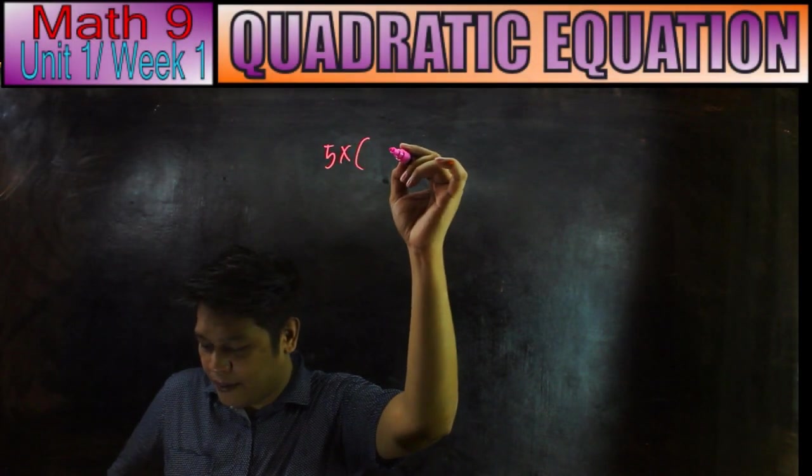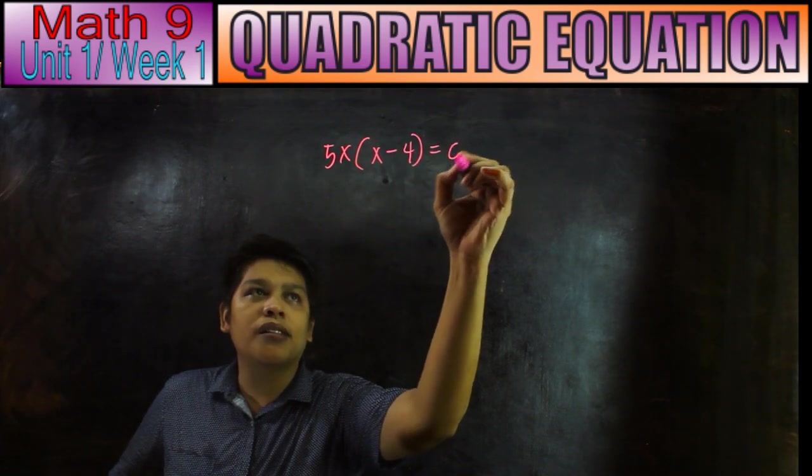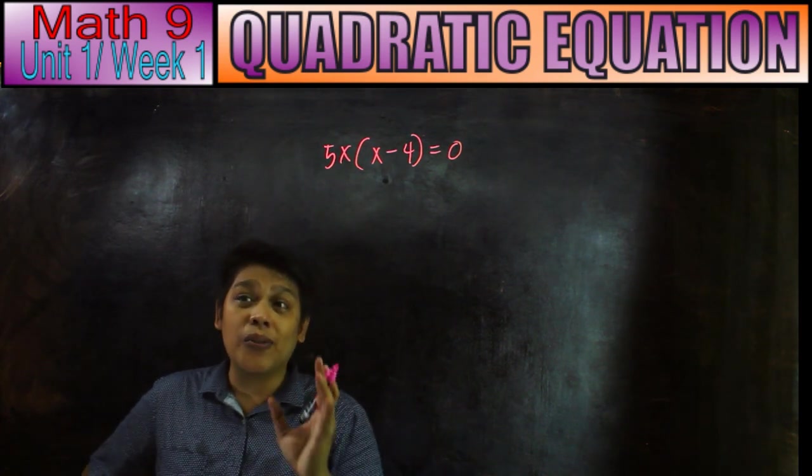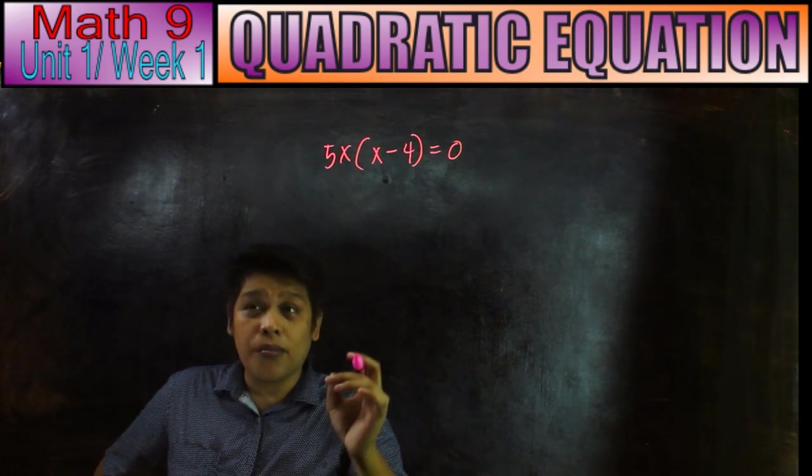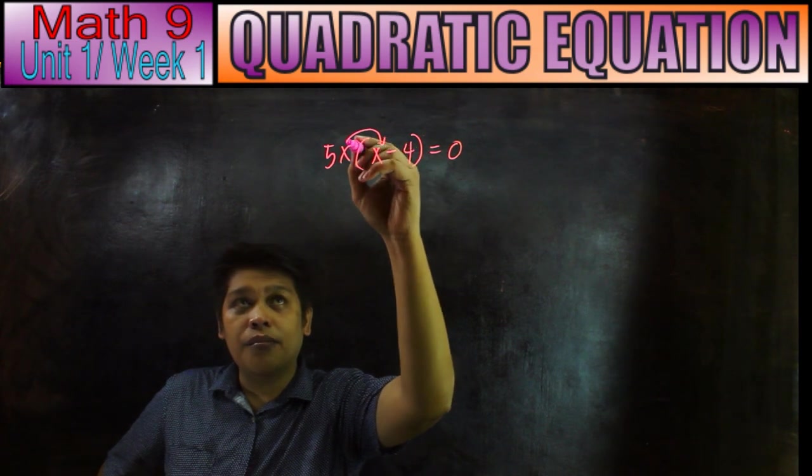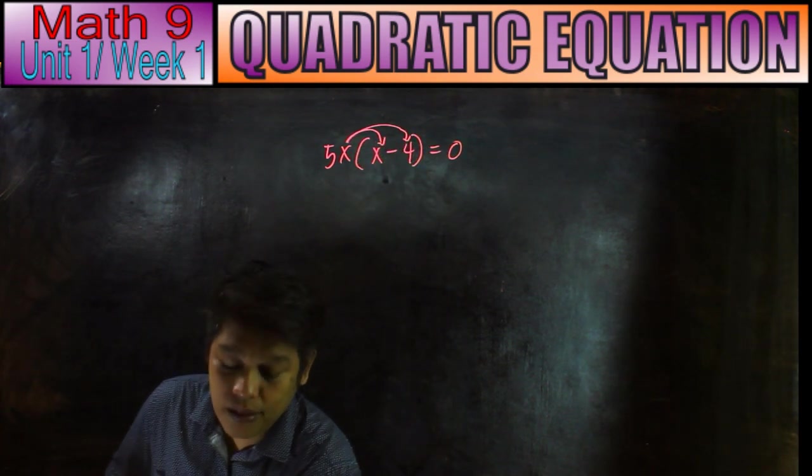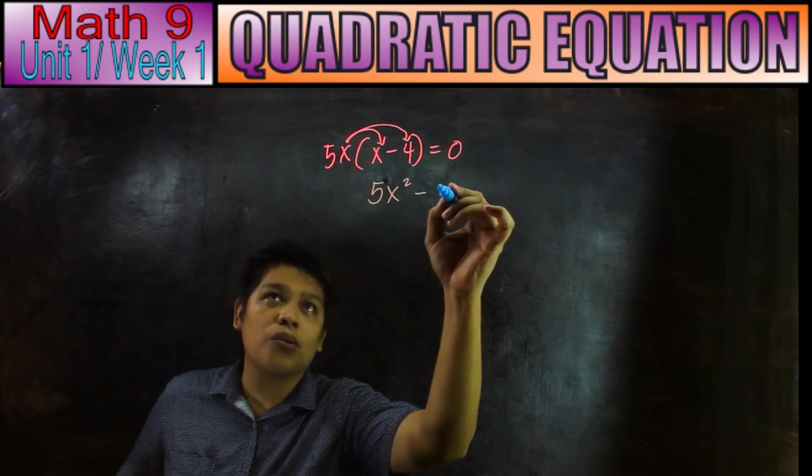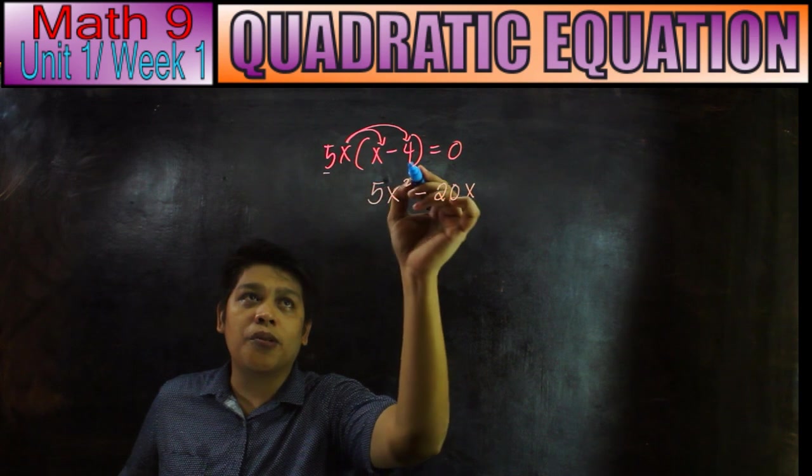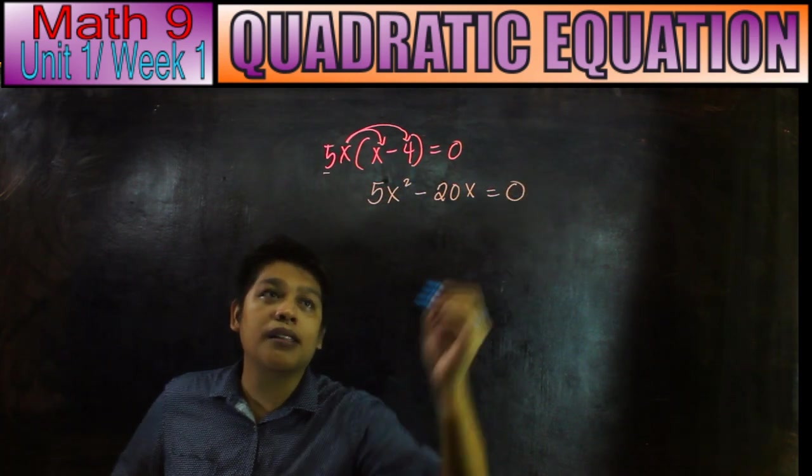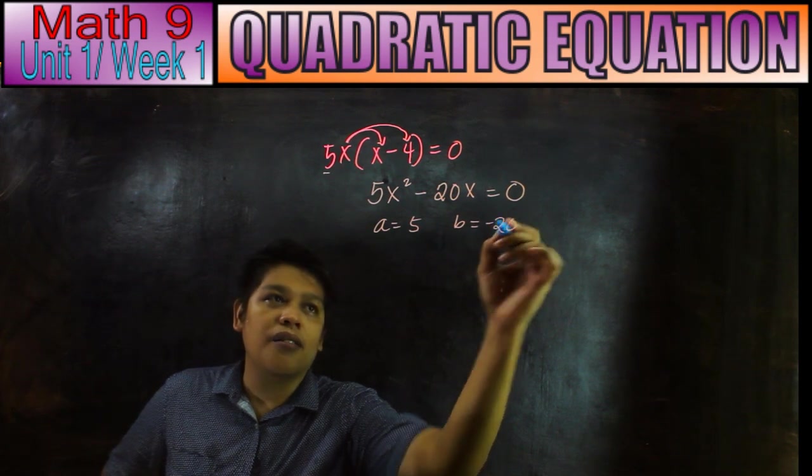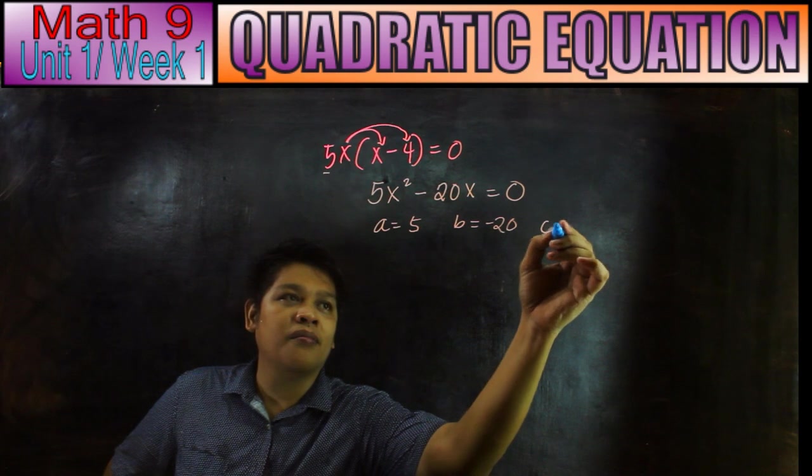Another example. We have 5x times x minus 4 equals 0. Wala siya yung degree of 2. So ang gagawin natin, using the distributive property of multiplication, multiply 5x to the first term and to the second term. So 5x times x becomes 5x squared minus 20x, because 5 times 4 is 20, equals 0. So our A is 5, B is negative 20, and C is 0.